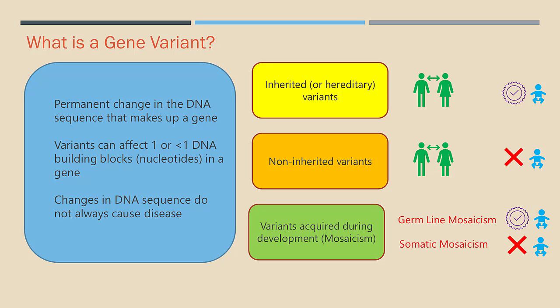Non-inherited variants can be caused by environmental factors such as ultraviolet radiation or errors acquired during replicative cell division. If the event leading to mosaicism occurs during development, it is possible that both somatic and germline cells will become mosaic. If the mosaicism occurs only in a somatic cell population, the phenotypic effect will depend on the extent of the mosaic cell population; however, there would be no risk of passing on the mosaic genotype to offspring.